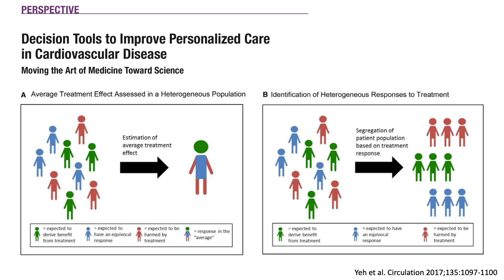In panel A, you see the average treatment effect assessed in a heterogeneous population. Looking at the average treatment effect, we have a mixture of patients: those who will be harmed by the new treatment shown in red, those who will benefit from the new treatment shown in green, and those for whom both treatments are equipoise shown in blue. You cannot decide based on this mixed picture alone. So it is very important to identify the heterogeneous response to treatment, to segregate the patient population based on treatment response, and identify in advance who will be harmed, who will benefit, and for whom both treatments are equal.